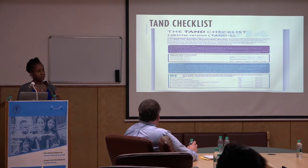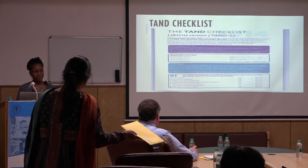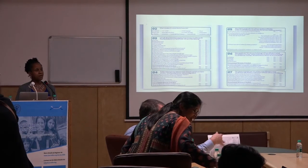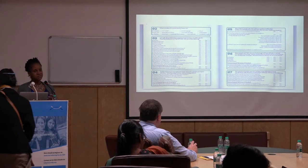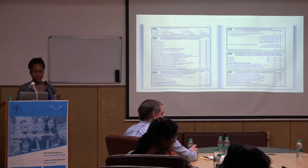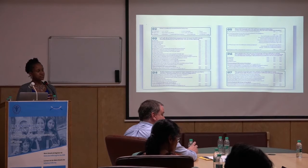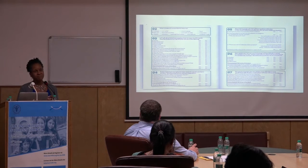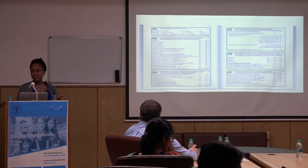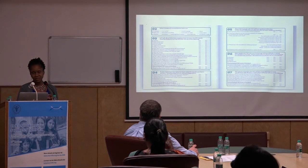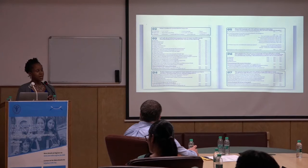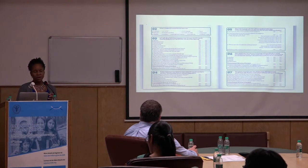We go through each section with the family. Section one is about early development — we want to know the age at which they accomplished developmental tasks. Section two is about current development: what the individual is currently doing in the areas of self-care, language, and mobility. Section three is where we spend the bulk of our time. The TAN checklist takes 15 to 20 minutes to administer if you're simply doing yes or no, but for us it's a living, breathing document. We can spend 40 minutes in this section because we want to know what behaviors are occurring, how long they've been occurring, what the triggers are, what makes them better or worse, and what kind of care they're getting for each condition.